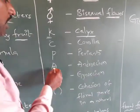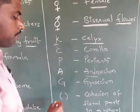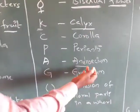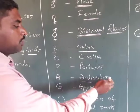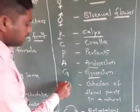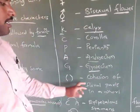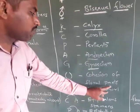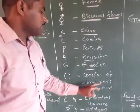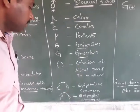A indicates androecium — the male reproductive organ. G indicates gynoecium — the female reproductive organ. A bracket indicates the number of floral parts in a whorl, representing the count of floral parts in that whorl.